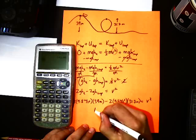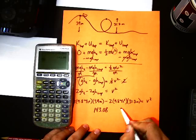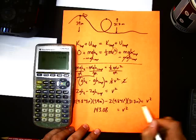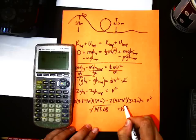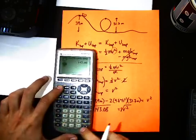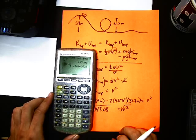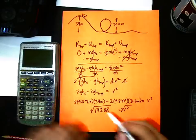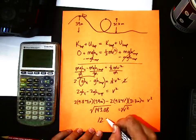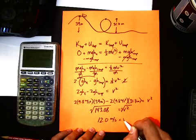143.08. So 143.08. That's our answer, right? Not quite, not quite. Remember, this is V squared. So we still have to take the square root of that. Square root gives us 11.96. We'll go to the three significant, so really we'll round that to 12.0. So 12.0 meters per second is our velocity.